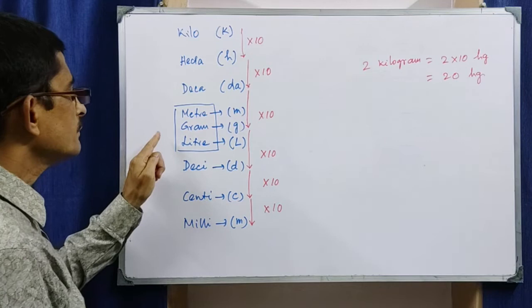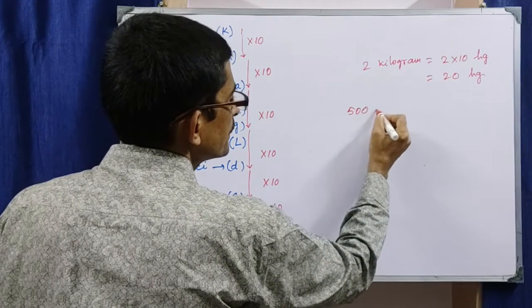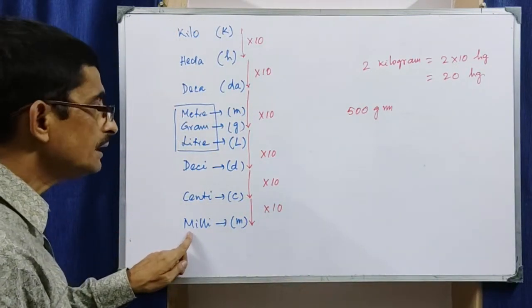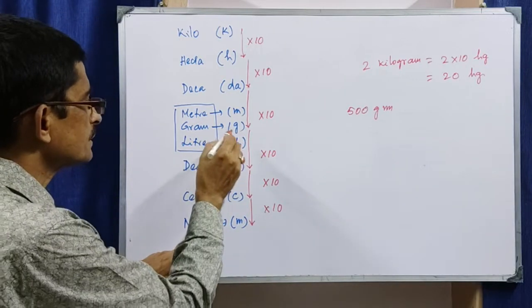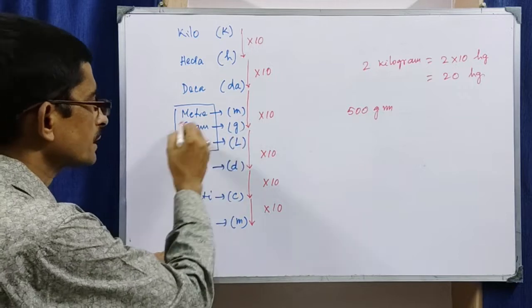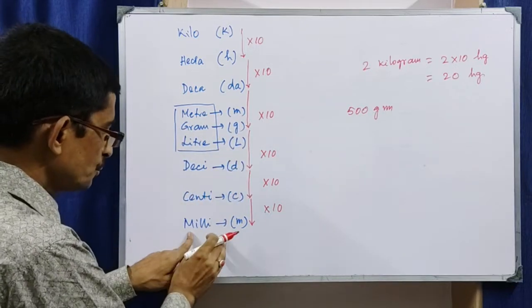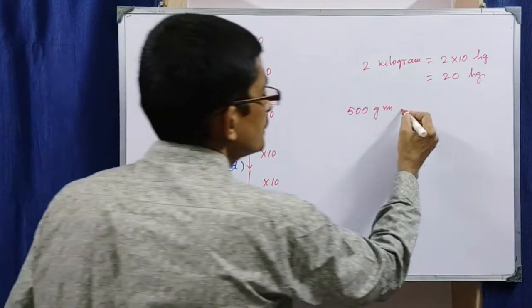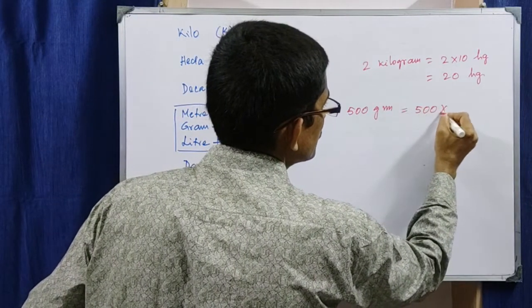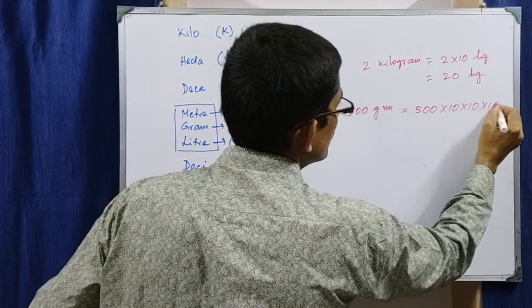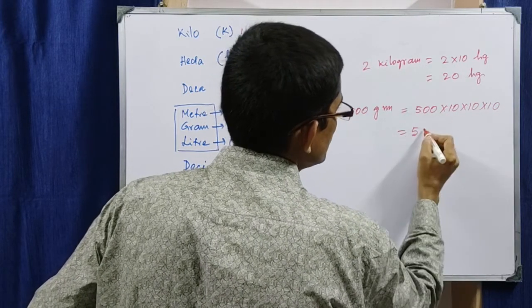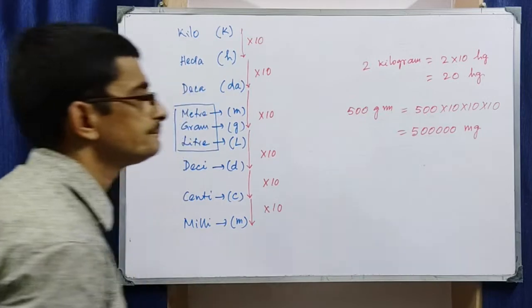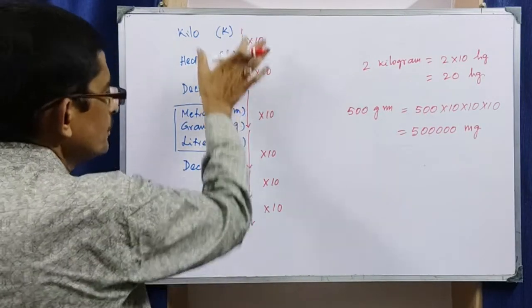For example, if you have 500 grams and you need to find its equivalent in milligrams: you are at gram and need to go to milligram — that is 3 steps downward. So you multiply by 10 three times: 500 into 10 into 10 into 10, giving 500,000 milligrams. This is how we convert when moving downwards.